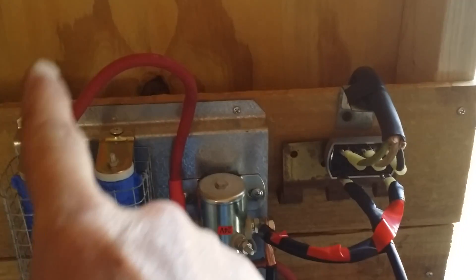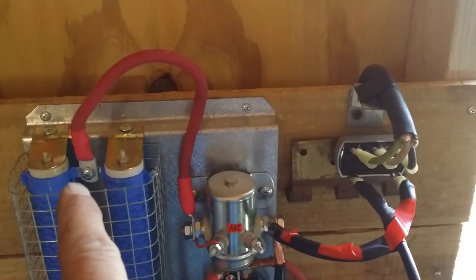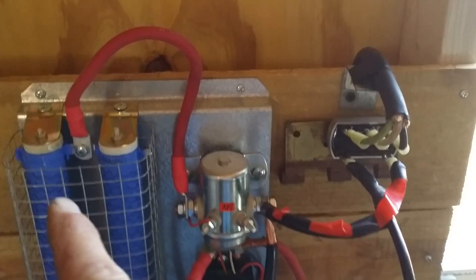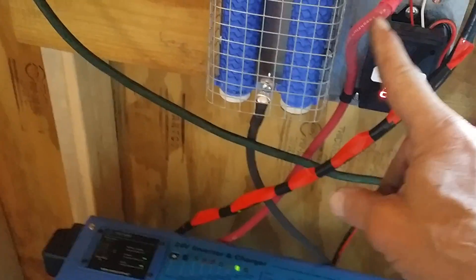I got the divert load here. When the wind generator creates too much electricity, it's gonna divert it to these resistors. And the ground goes down here to the ground. This goes to the battery positive.